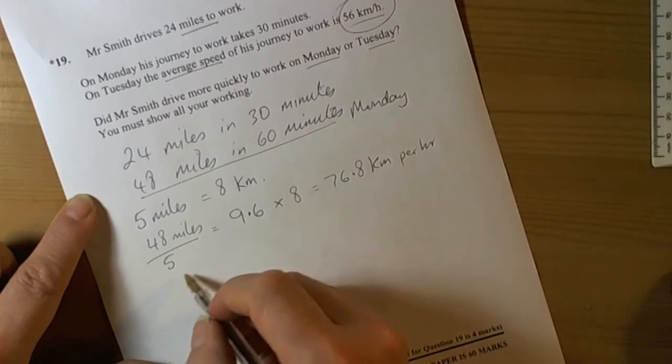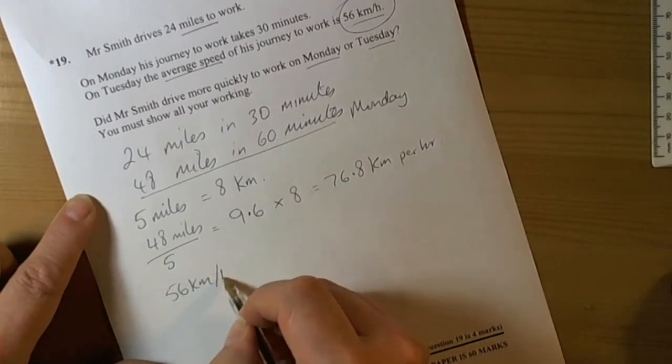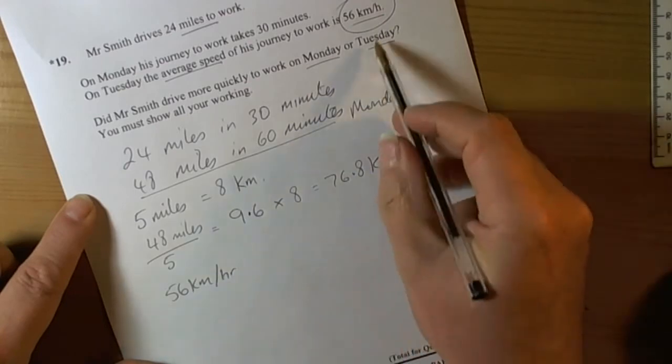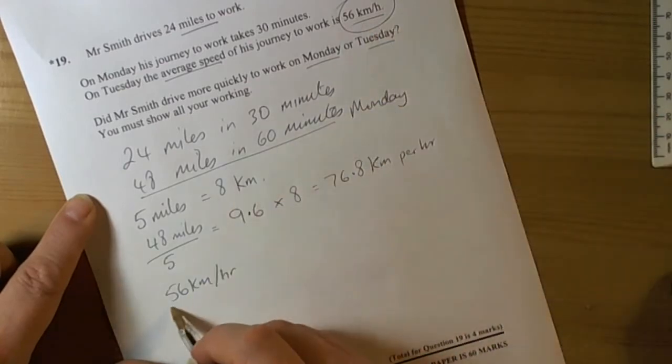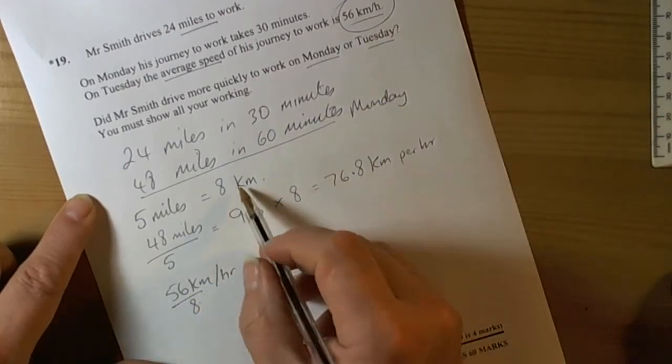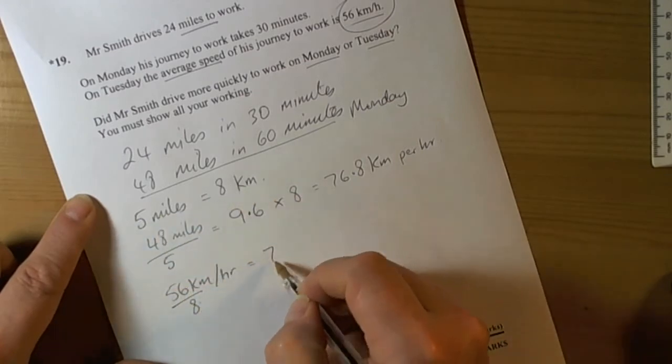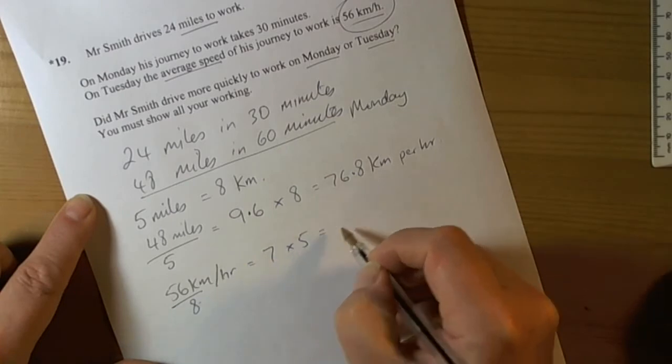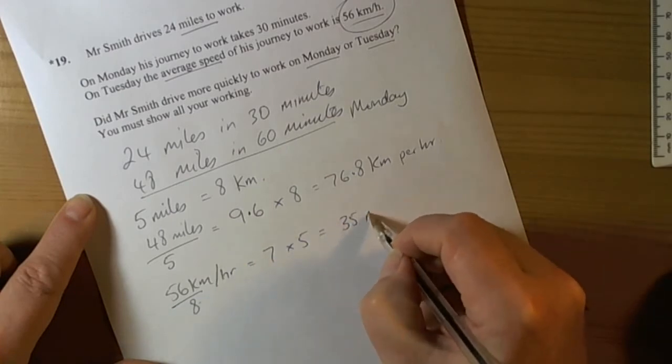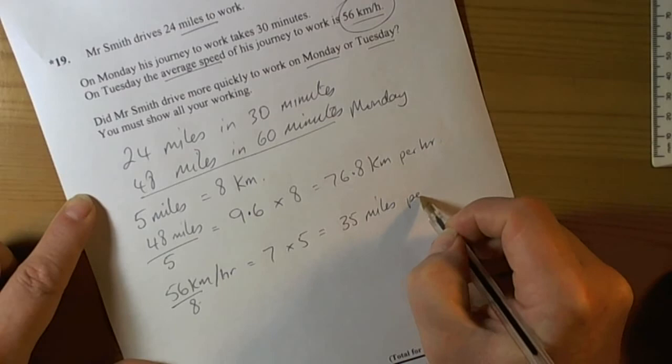Now we can do a double check. We knew that it was 56 kilometers per hour on Tuesday. And if we divide that by 8, then we can find out how many 5 miles we've got. So 56 divided by 8 is 7, and if we times that by 5, then that's going to be 35 miles per hour.